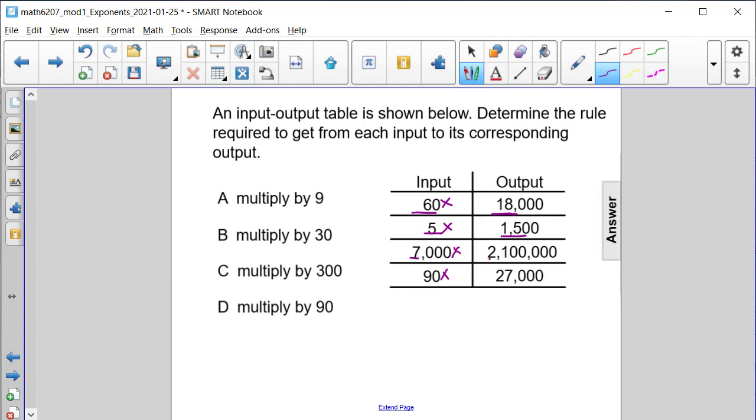7 to 21, what do I multiply by? 9 to 27, what do I multiply by? It ends up being 3.